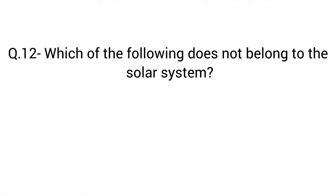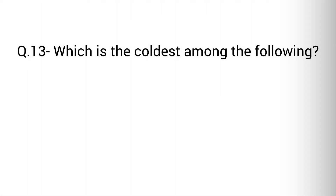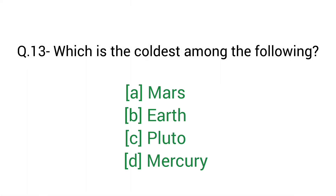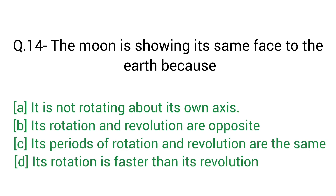Question number 12: Which one of the following does not belong to the solar system? Right answer D — Nebulae. Question number 13: Which one of the following does not belong to the solar system? Right answer D — Nebulae. Question number 14: The moon is showing its same face to the Earth because? Right answer C — its periods of rotation and revolution are the same.